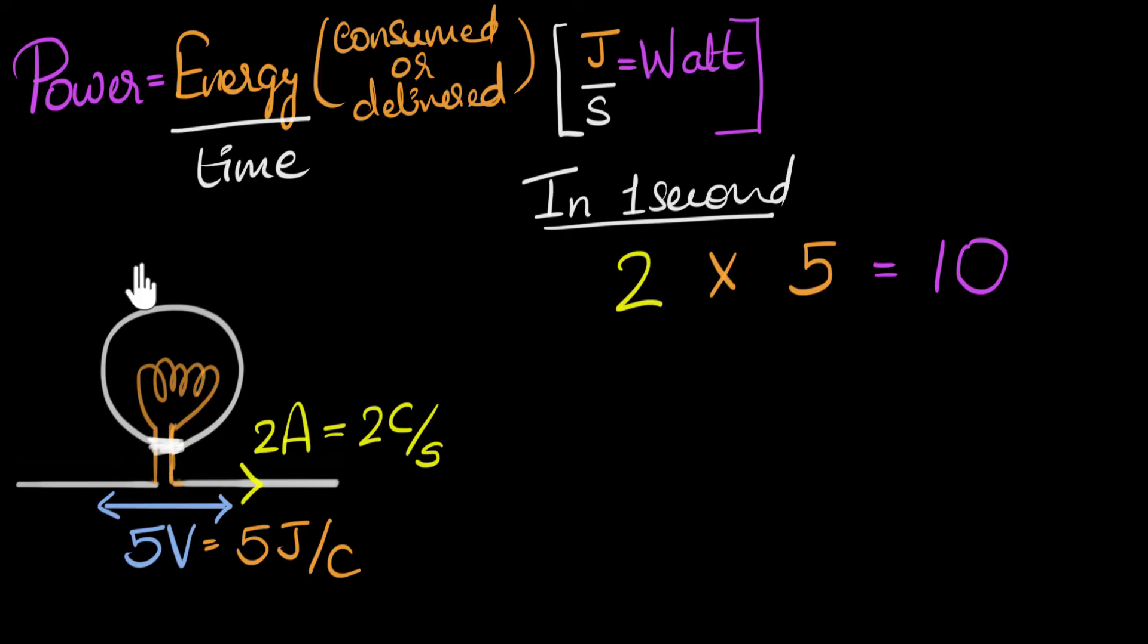Anyway, if you look at the units also, we'll get the same thing. Notice, two coulombs are passing every second, into five joules per coulomb. The coulomb-coulomb cancels. And we get ten joules per second, which we call as ten watts.